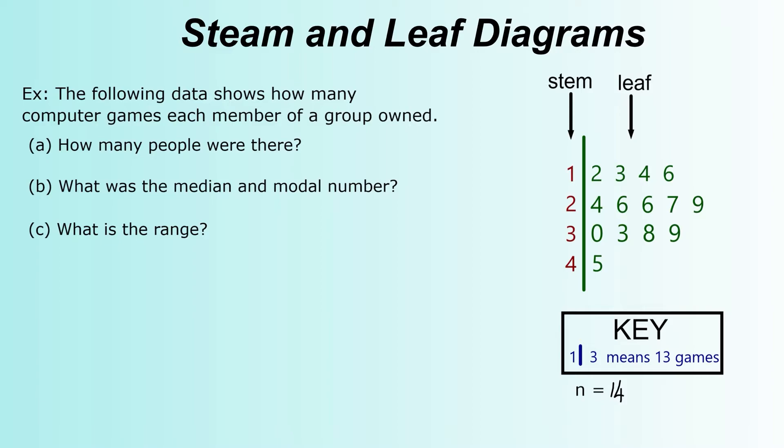So let's have a look at the questions you're typically asked. For part a, how many people were there? We've just done that. We've just covered that. There's 14 people asked how many games they owned. So 14, that's basically your n value.